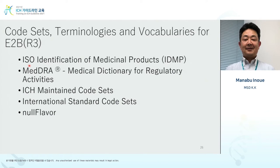Now let's talk about terminologies used in E2B R3. First, the ISO specification IDMP — usually for drug product information — is partially implemented but not fully yet. That is the current status. Next, MedDRA, which you are very familiar with — AE information, disease name, and diagnostic information are coded using MedDRA.